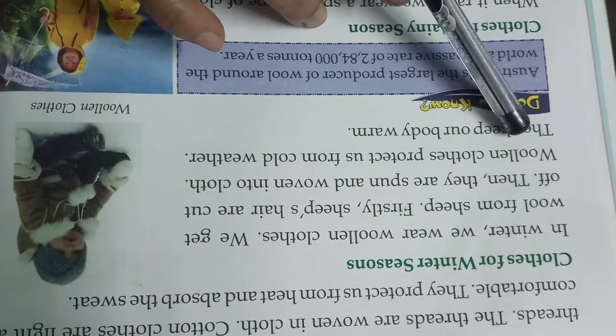Clothes for winter seasons: In winter, we wear woolen clothes. We get wool from sheep. Firstly, sheep hair is cut off, then it is spun and woven into cloth. Woolen cloths protect us from cold weather. They keep our body warm. Australia is the largest producer of wool around the world at a massive rate.